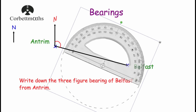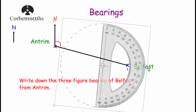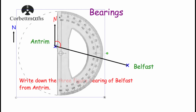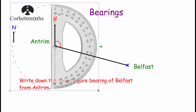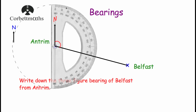So we're going to get our protractor and line it up with Antrim, turning it so that we have our zero at the top, putting it on our north line so the zero is perfectly at the top with north and the cross is at the centre on Antrim. Then all we need to do is measure the angle clockwise from north around to the line. Going from zero around to 100, then 101, 102, 103, 104 — it's just short of 105, so it's 104 degrees. That means the bearing of Belfast from Antrim is 104 degrees.